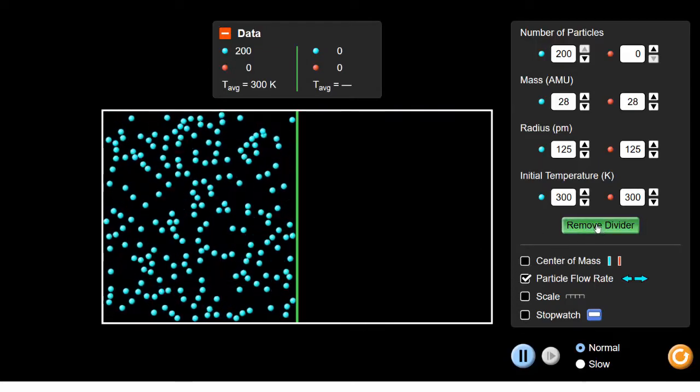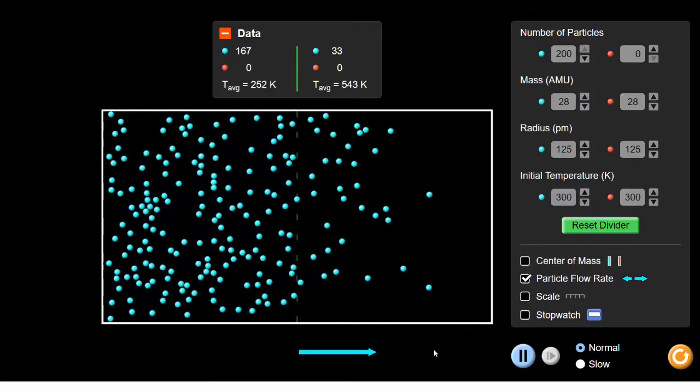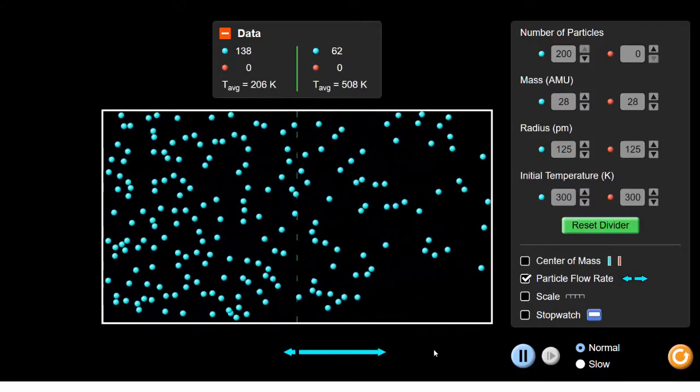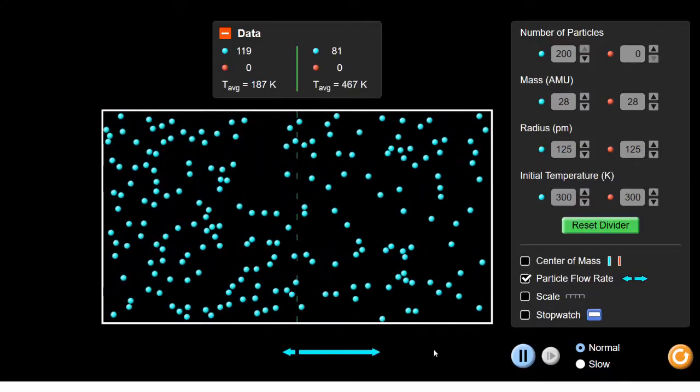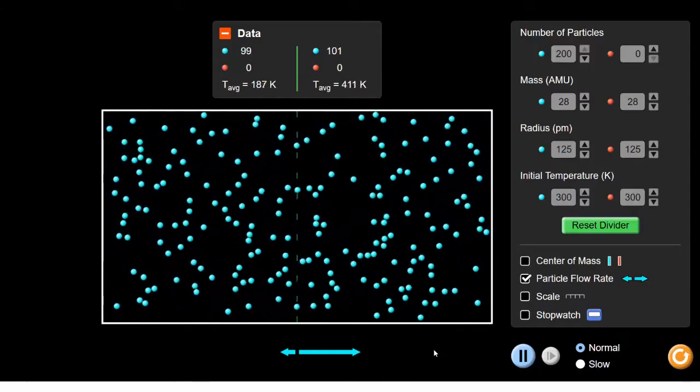Let's remove the divider. There's the flow arrow at the bottom. At the start the particle flow is only from left to right. That's because there aren't any particles on the right that could flow to the left.